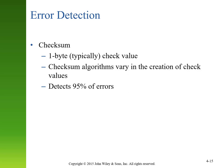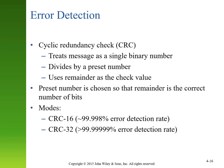A more robust version of error detection is checksum, where we add one byte — eight bits — to a message and perform an algorithmic check between the checksum and the message. The most robust technique is cyclic redundancy check, or CRC, used in modern networks today. We treat the entire message as a single binary number, divide it by a preset number, and use the remainder as the check value. CRC-16 detects around 99.998% of errors, and CRC-32 detects almost 100% of all errors, making CRC very popular in modern network protocols.